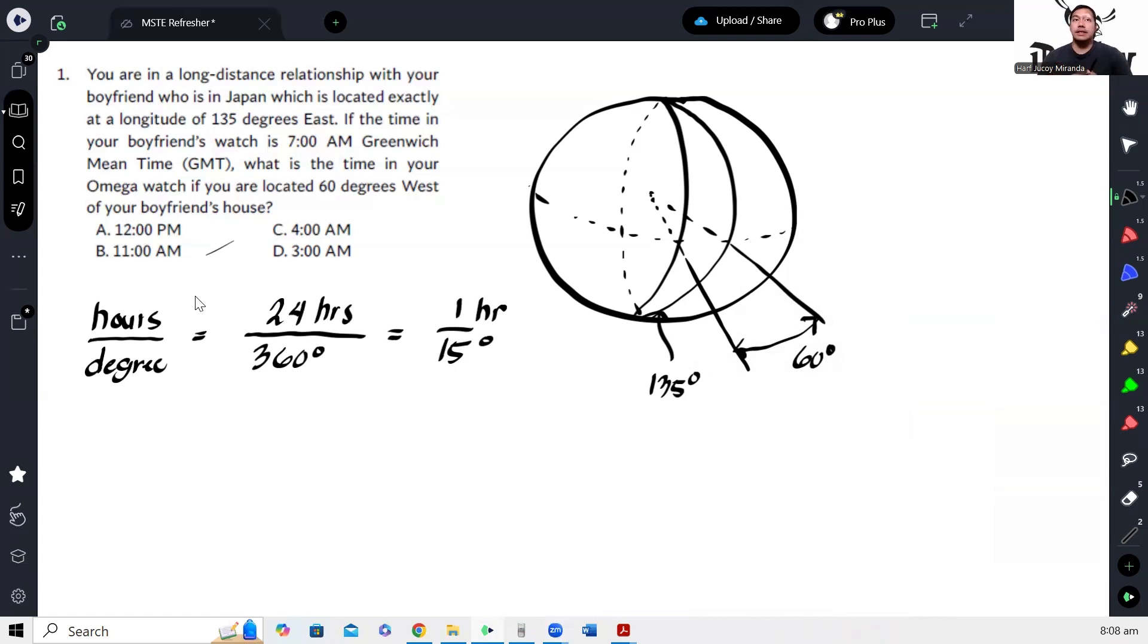Okay, so meaning if we have 60 degrees between them, if we have 60 degrees between them, all you have to do is multiply this by 60 degrees to determine how many hours is the difference between them.